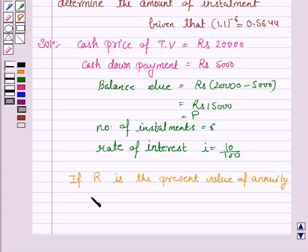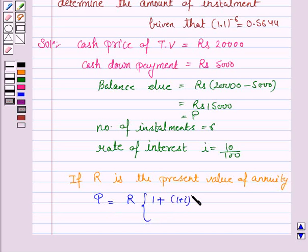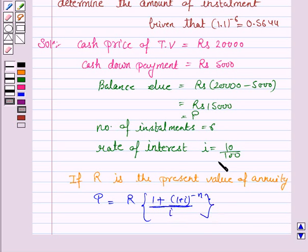...then the principal P is given by R into [1 minus (1 plus i) to the power minus n] upon i, where i is the rate of interest and n is the number of installments.